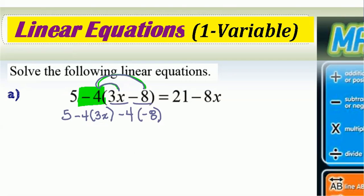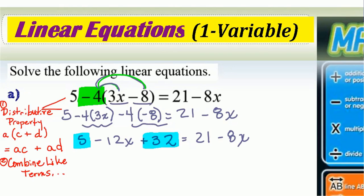So we'll bring down the other side of the equal sign. And let's go ahead and carry out these little multiplications here. So we'll have 5 - 12x + 32 and bring down the right side. Anytime you've distributed, you always would like to combine like terms. Five and 32 are like. So we'll have -12x + 37, five plus 32, and bring down the right.